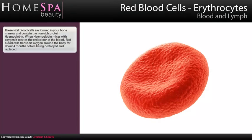Red Blood Cells – Erythrocytes. These vital blood cells are formed in your bone marrow and contain the iron-rich protein haemoglobin. When haemoglobin mixes with oxygen, it creates the red colour of the blood. Red blood cells transport oxygen around the body for about 4 months before being destroyed and replaced.